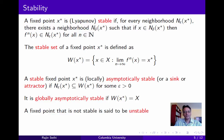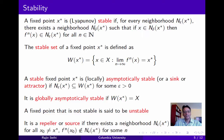A fixed point that is not stable is said to be unstable. We call it a repeller or a source if there exists an epsilon neighborhood of the point such that for all points other than the fixed point within this neighborhood, all orbits that begin within the neighborhood eventually leave the neighborhood.